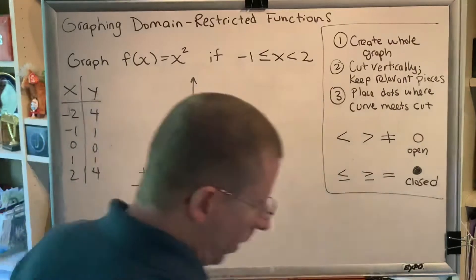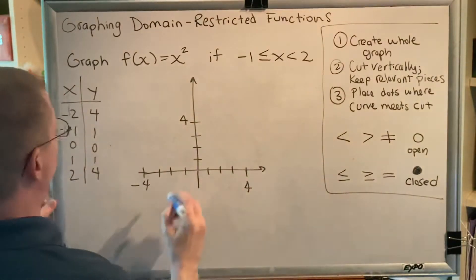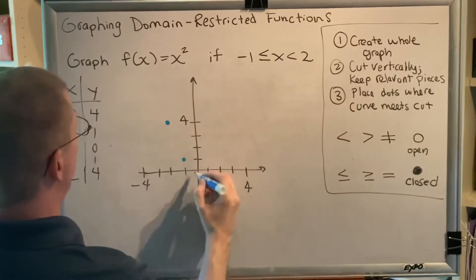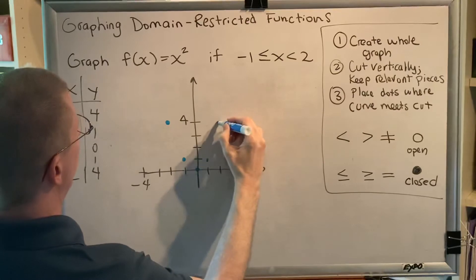And we'll plot our points. Alright, so this is our parabola. So negative 2, 4, negative 1, 1, 0, 0, 1, 1, 2, 4.